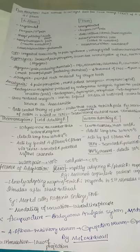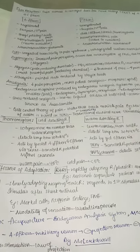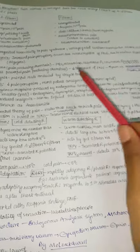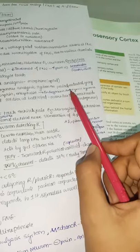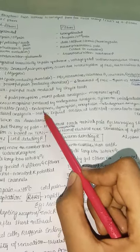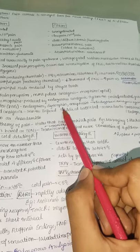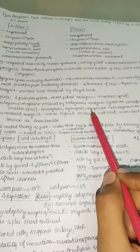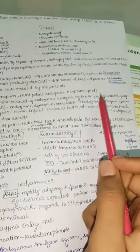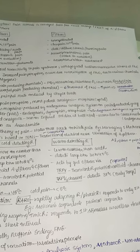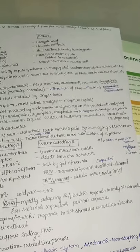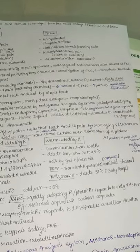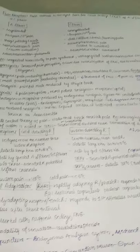Analgesia is decrease in pain perception. The most potent analgesic is morphine (an opioid). Inside the body, endogenous morphine-like substances are produced by the analgesic system and the periaqueductal gray matter — these are endorphins, dynorphins, and enkephalins — forming the endogenous analgesic system.